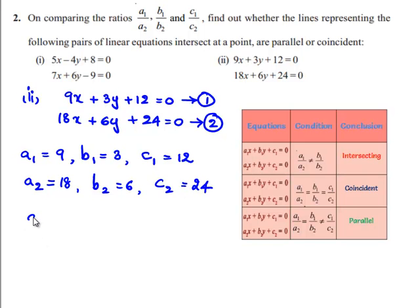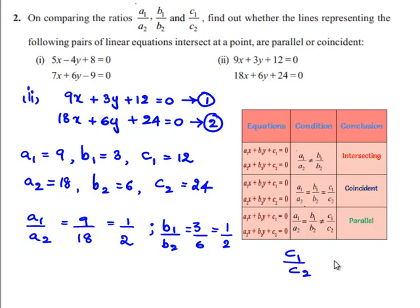So let us find a1 by a2, which is 9 by 18, which equals 1 by 2. And b1 by b2 equals 3 divided by 6, which is 1 by 2. And c1 by c2 equals 12 divided by 24, which is 1 by 2.